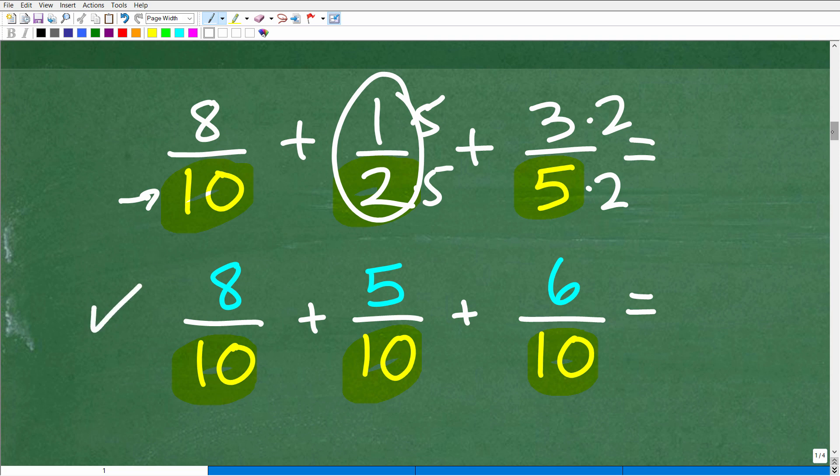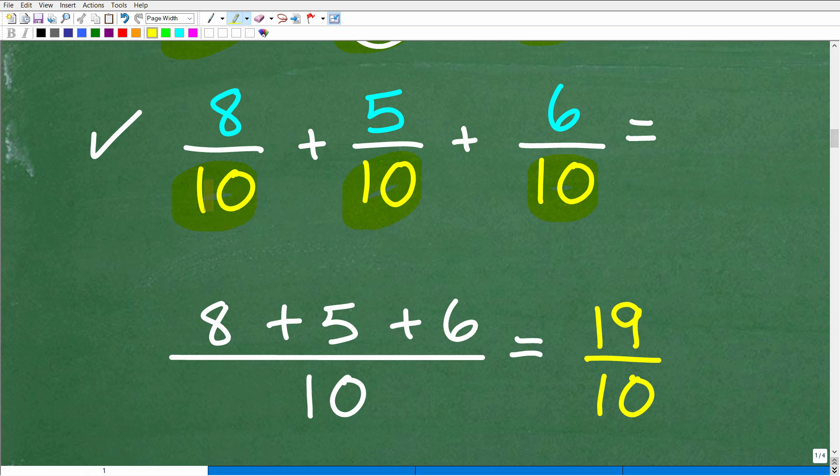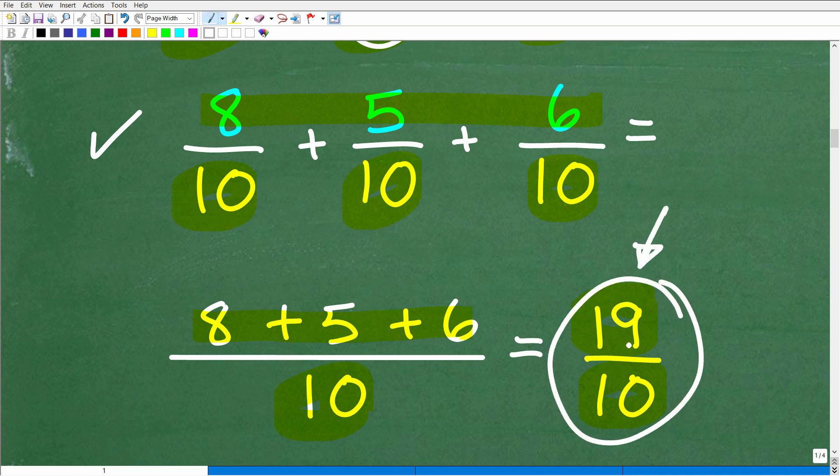Okay, so now we're ready to go ahead and add these fractions up. It's super easy. Anytime you have the same denominator, you're talking about adding or subtracting fractions, we just simply write the denominator 10 and then add or subtract the respective numerators. In this case, it's 8 plus 5 plus 6, which of course gives us 19 or 19 over 10. And that is it.